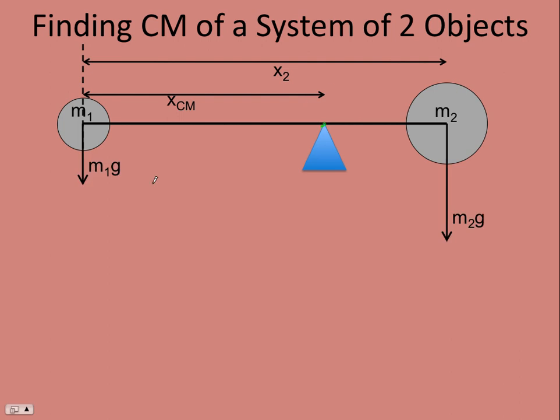And so we draw a free body diagram. We have the weight of M1, the weight of M2. I'm assuming M2 is bigger here. It's drawn bigger. There also would be a normal force at the fulcrum, but we are going to sum the torques about the fulcrum. Counterclockwise positive. And so counterclockwise positive, so I don't really care about the normal force.